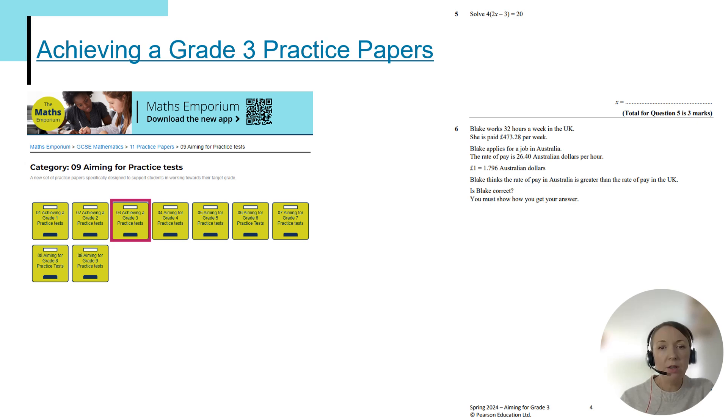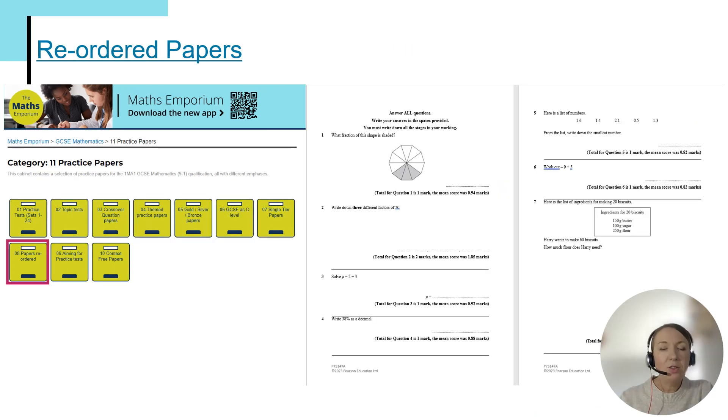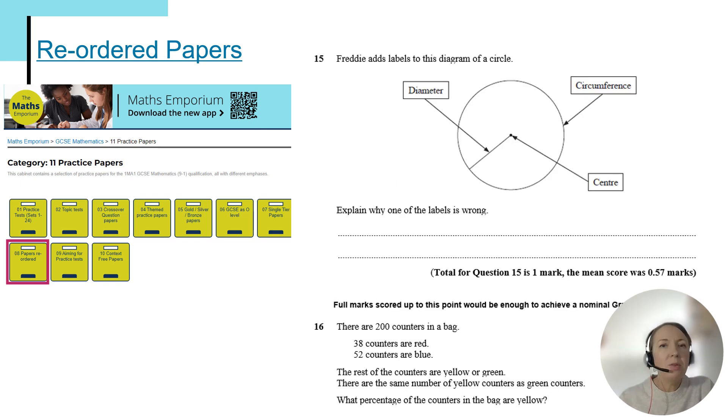We also have our achieving a grade 3 practice papers, and as always at these grade levels of 1 to 3, I always recommend our reordered papers. These allow you as a teacher to really home in on the questions that we know students are likely to be successful in, and it gives students a really clear sense of progress as they begin to be able to get further into the papers. These papers also include a helpful note to show when full marks up to a point would be enough to achieve a given grade. In this example here, students can achieve full marks up to question 15 and that would be enough to achieve nominal grade 3 on that paper.